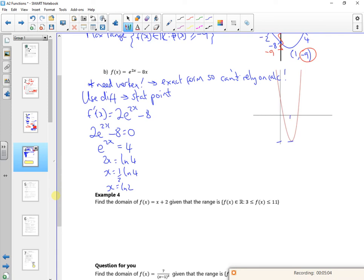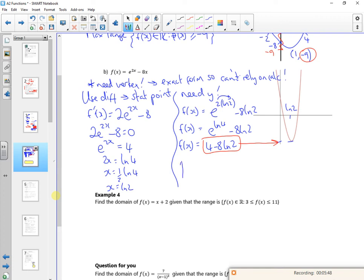So that's kind of the x value, log 2. But that's no good because I need the y value. So f of x is e to the 2 lots of log 2 minus 8 lots of log 2. So I've got e to the log 4 minus 8 log 2. The e and the ln cancel. So I've got 4 minus 8 log 2. I could take the 8 up as a power if I wanted to. So what I'm saying is now that that stationary point, that bottom of the graph is there, 4 minus 8 log 2. So my range starts there. So f of x belongs to the real numbers such that f of x is greater than or equal to 4 minus 8 ln 2. There you go. That's a bit full on, isn't it?